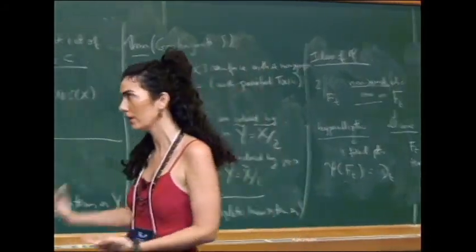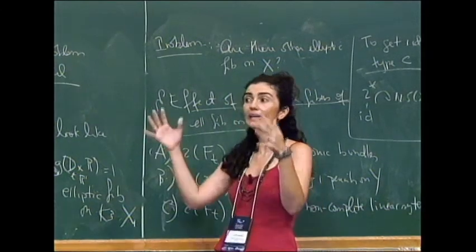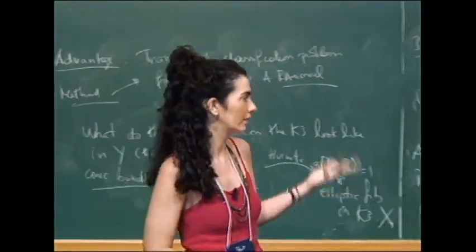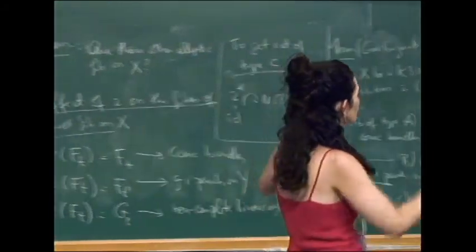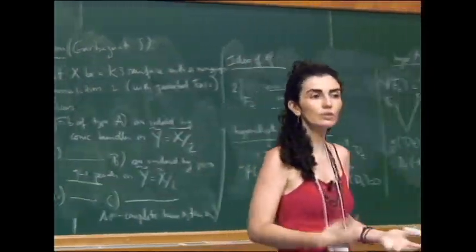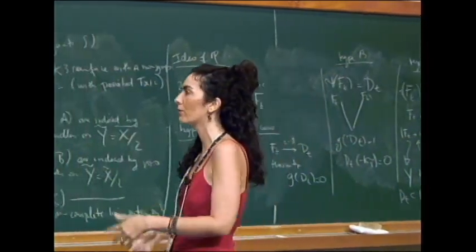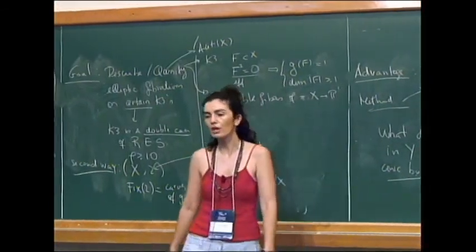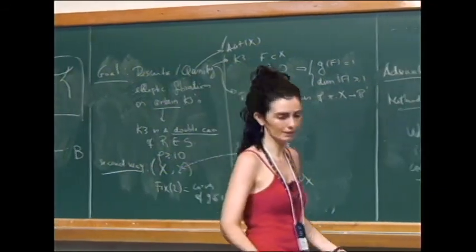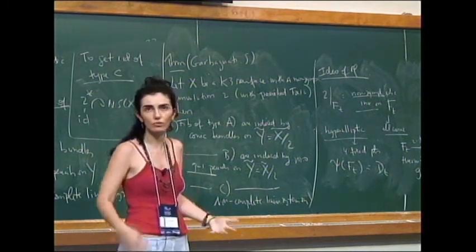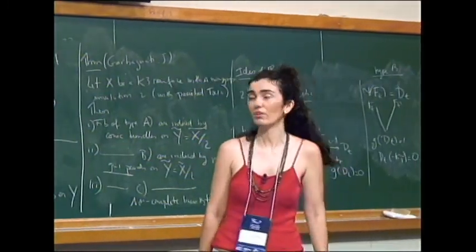To finish: we can now really list all fibrations on certain K3s. In another paper coming soon, we worked out all of this to get a complete list of elliptic fibrations, for example where ι fixes a curve of genus 1 and K rational curves, where K ranges from 1 to 9. I really hope this method gives a lot of information about K3 surfaces. I'll stop here.